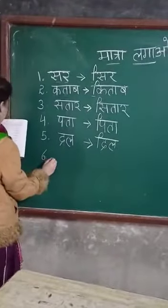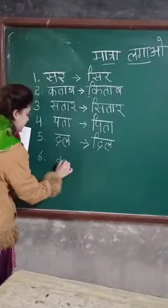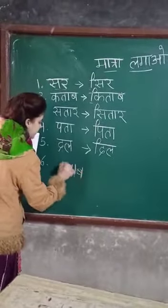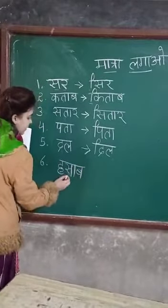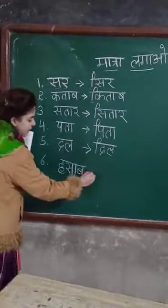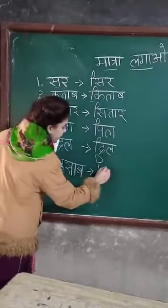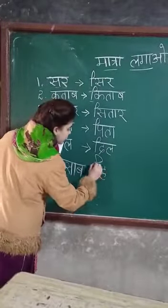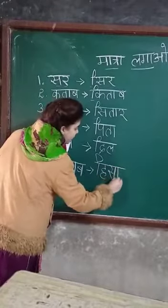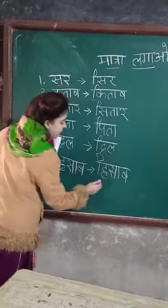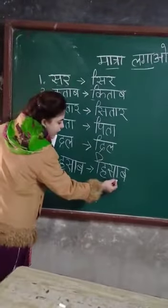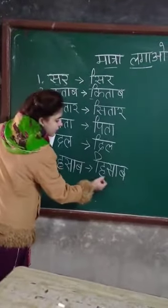Now our sixth word. H, sa, ko, a, b, ha, sa. Okay? H, sa, ko, a, b, ha, sa. Now get your chhoti ee ki matra — sa, ko, a, b, ha, sa. Okay? H, sa, ko, a, b, ha, sa.